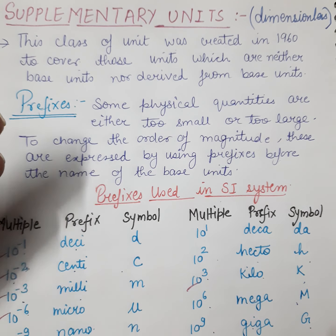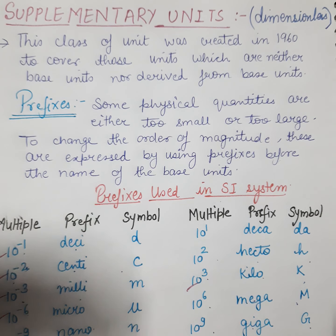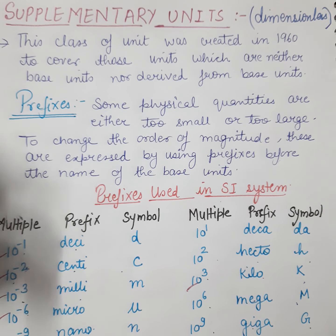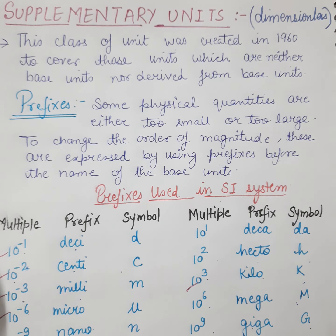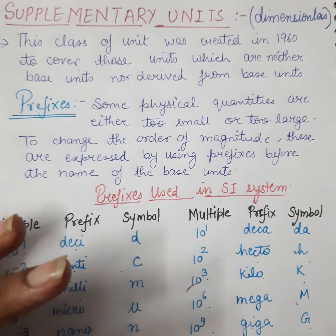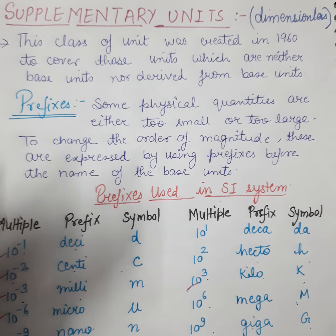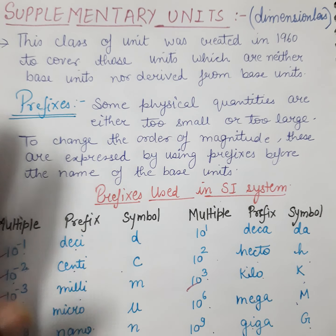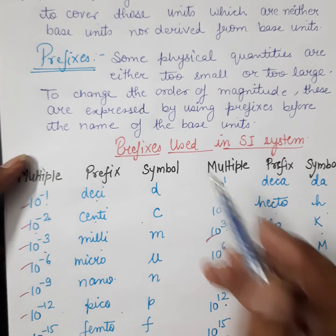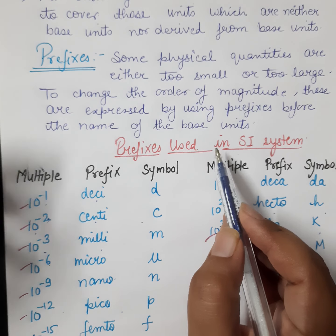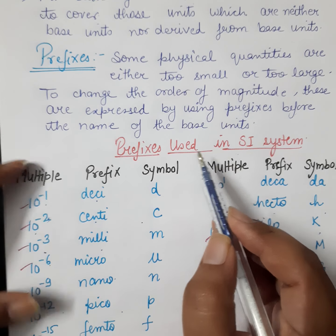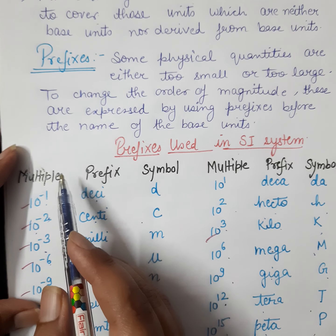We learned the base units in the fundamental units. For example, if we measure the length of a pen or a table, and we put the length in centimeters, then 'centi' is the prefix used before the base unit. There is a table of prefixes used in the SI system already drawn in your NCERT book — just go through your NCERT. The table has six columns: multiple, prefix, and symbol.